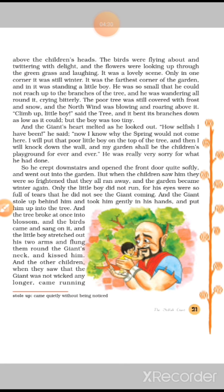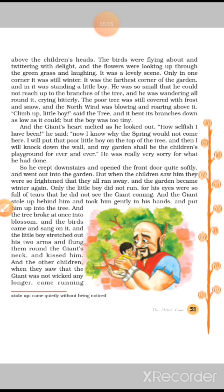I will put that poor little boy on the top of the tree, and then I will knock down the wall. Mein is chhote bachche ko peed pe chadhaunga, aur phir apne charo taraf ki diwaar ko hata dunga. And my garden shall be the children's playground forever and ever. Aur yahaan pe bachche hamesha aate rehenge. He was really very sorry for what he had done. So he crept downstairs and opened the front door quite softly and went out into the garden. Usne apne darwaza ikdam bohot quietly — koi aahat na ho — aise khola aur garden ki taraf chala gaya. But when the children saw him, they were so frightened that they all ran away and the garden became winter again. Dubara se us jaga pe winter aa gaya.